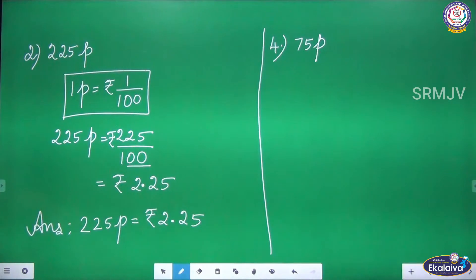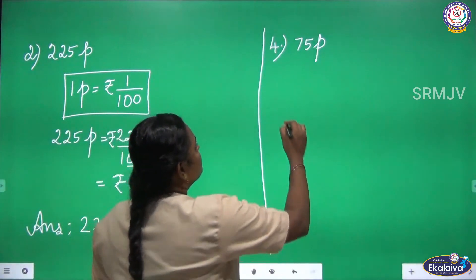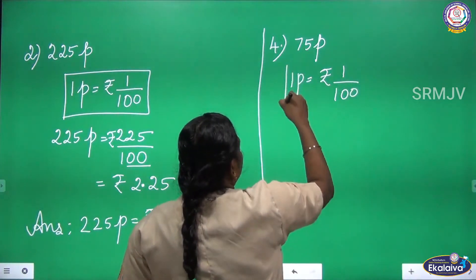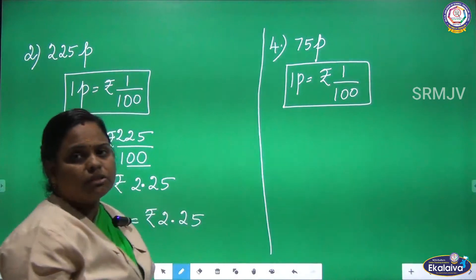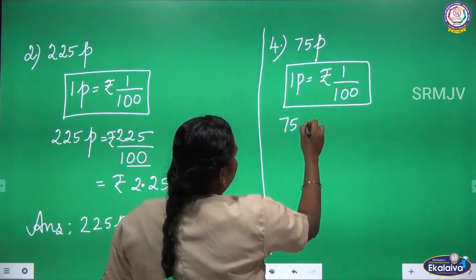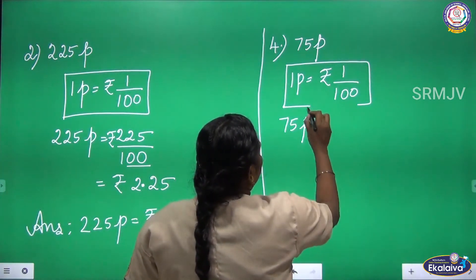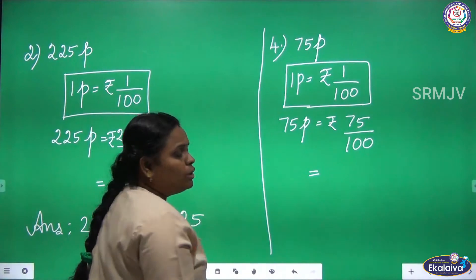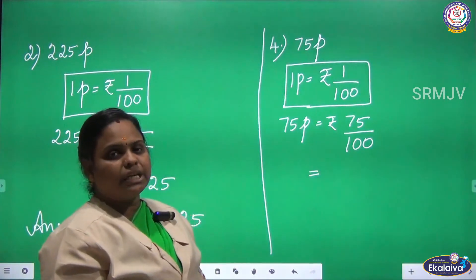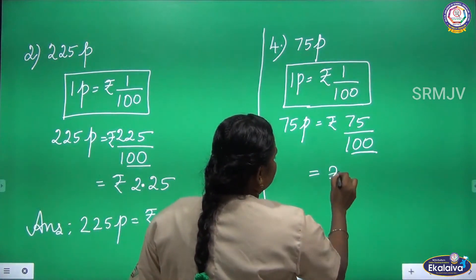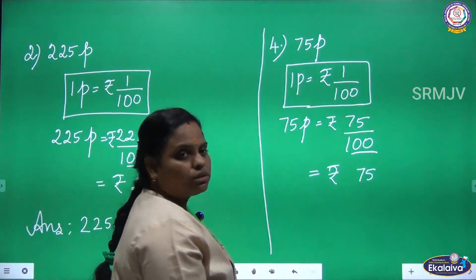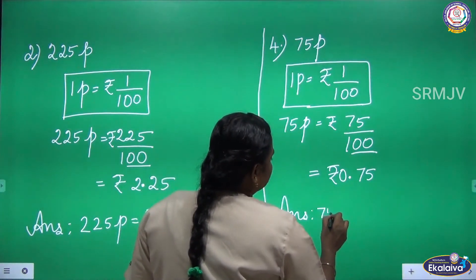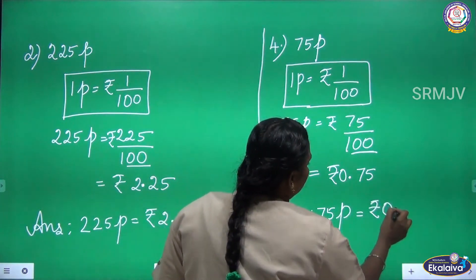Next: 75 paise. 1 paise equal to rupees 1 by 100. So 75 paise equal to rupees 75 by 100. In the denominator there are 2 zeros. To convert fraction to decimal, you put the decimal after 2 digits from the back — after 1, 2 — and write 0 here. The answer is 75 paise equal to rupees 0.75.